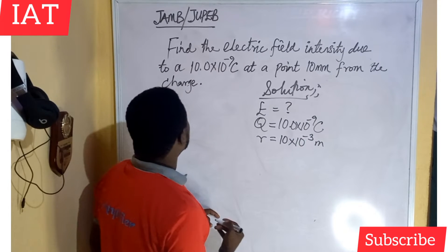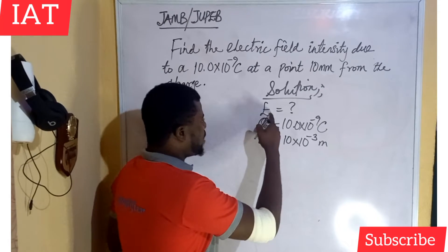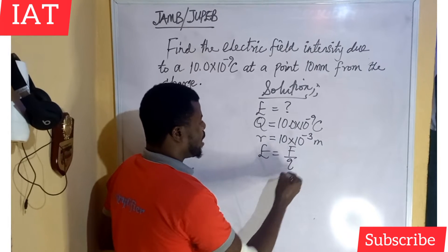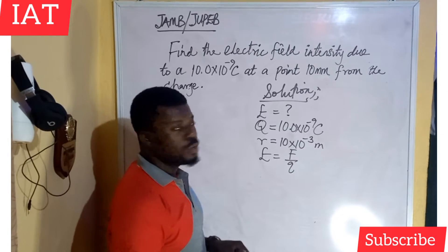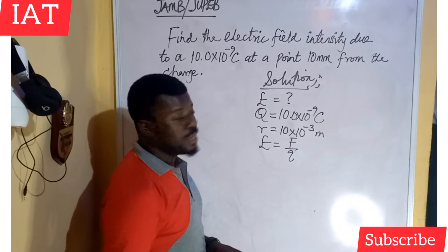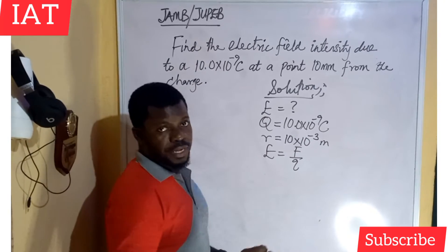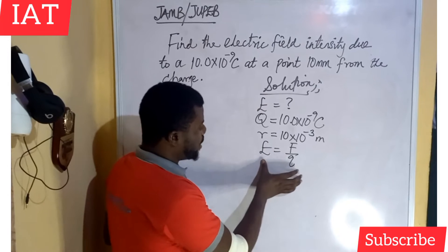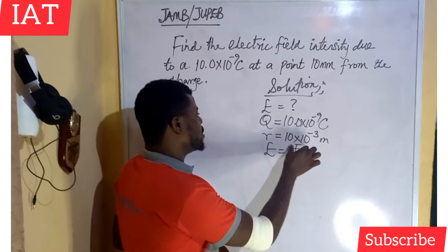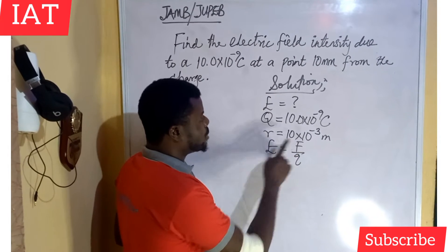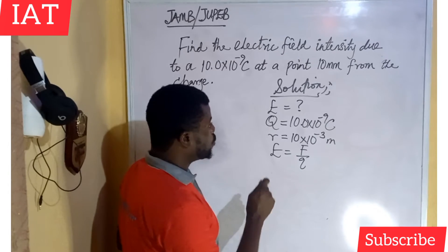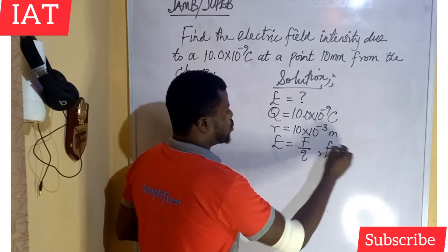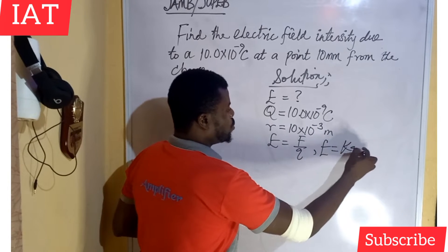We have two expressions for electric field intensity. The first one is E equal to force per unit charge. From the previous video on electricity I explained the concept of electric field intensity and Coulomb's law, and I derived another expression using Coulomb's law, substituting to get E equal to KQ over R squared.